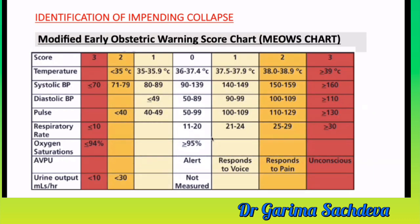To identify a woman going into collapse, you calculate a MEOWS score — Modified Early Obstetric Warning Score. A chart will be provided with temperature, blood pressure, and pulse. You do not need to memorize it but must know what to do based on the score. This has been asked in both Part 2 and Part 3 exams.